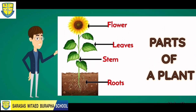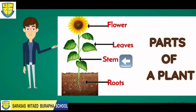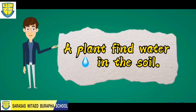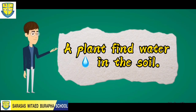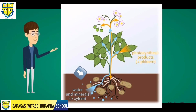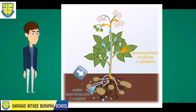The parts of the plant are: roots, stem, leaves, and flower. Plants find water in the soil. A plant's roots take the water from the soil and move it up the stem to the leaves.